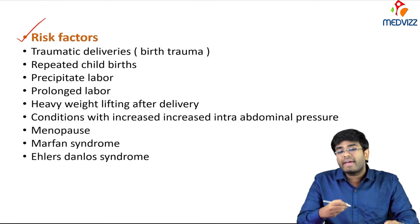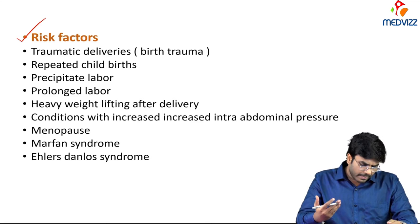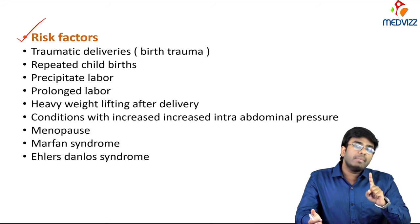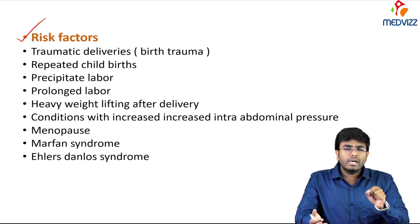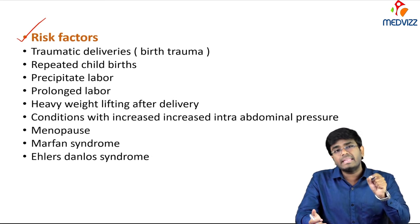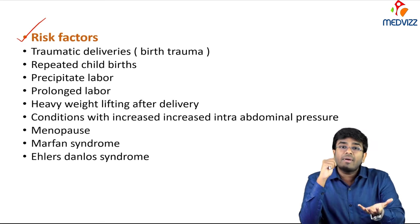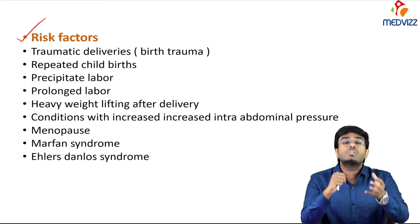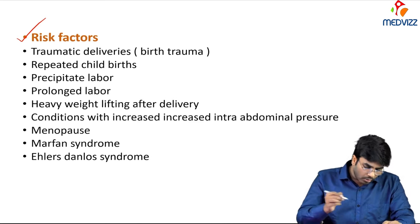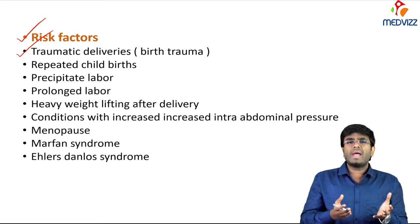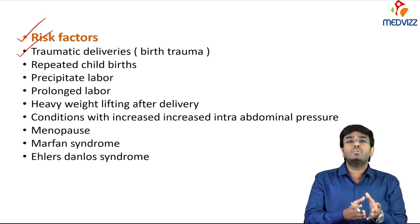Risk factors for pelvic organ prolapse: damage to the pudendal nerve (root value S2, S3, S4) innervates the pelvic diaphragm — damage causes loss of tone and prolapse. Traumatic deliveries can cause trauma to ligaments and muscular supports, leading to pelvic organ prolapse.